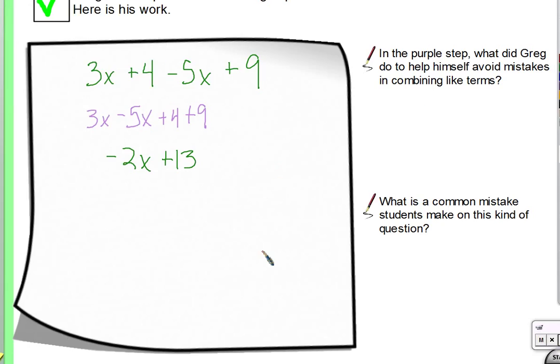Next up. Greg has done well. That's why he has a green check on his work. Okay. But I want you to answer this question in the purple step. What did Greg do to help himself avoid mistakes? And then we'll talk about why I'm bringing this up and what kind of mistakes they see. Okay. Olivia says she knows what Greg did. Can you arrange the problem differently so that the variables were, the numbers of variables were next to each other?